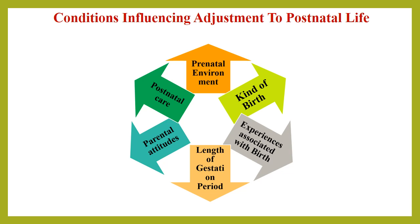The next condition is length of gestation period. Usually the length of gestation period is 280 days after conception. If a baby is born early, they are considered premature, and if they arrive late, they are considered post-mature. Premature babies usually experience complications in adjusting to postnatal life, which causes serious effects on future adjustments. Post-mature infants usually adjust more quickly and successfully to the postnatal environment than infants born at full term, provided the fetus is not damaged at birth. The next condition is experiences associated with birth — specifically, the extent to which the mother is medicated during the birth process, and the ease or difficulty with which the infant establishes respiration.